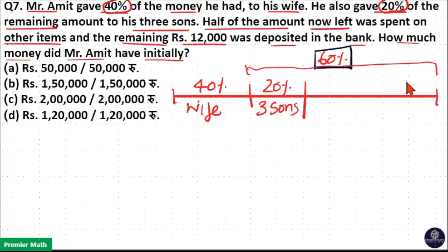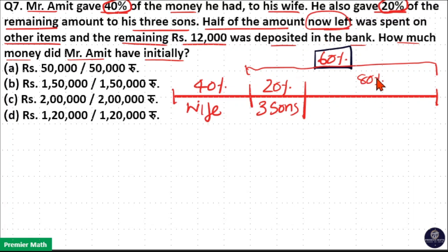After giving to his sons, the remaining is 100 minus 20 = 80%. So 60% of 20% he gave to his sons, and 60% of 80% is the remaining. Now, half of the amount now left — 80% of 60% — half of that is 40%, so half of the remaining is 40%, which was spent on other items.